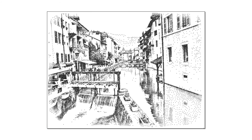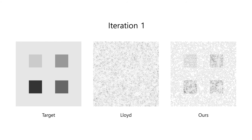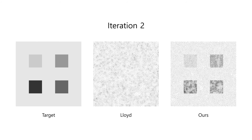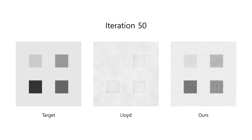We present LBG Stippling, a point distribution method based on adaptive Voronoi diagrams that is able to create point sets fast and with high accuracy. Weighted Voronoi stippling adapts to a given grayscale input by moving points iteratively to dense areas, while LBG stippling deletes or splits Voronoi cells and associated points to reach a wanted density.